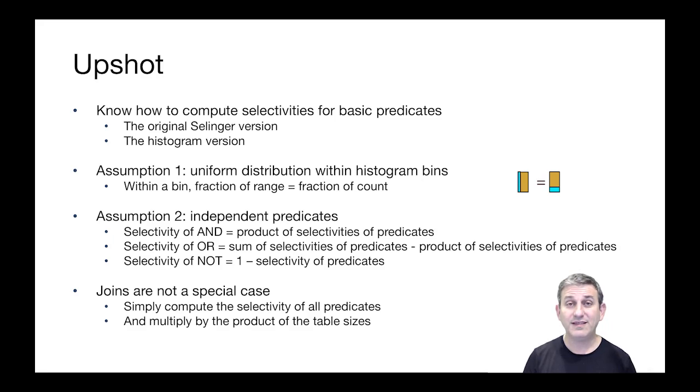The upshot of our discussion is that you need to know how to compute the selectivities for basic predicates and for logical expressions over those predicates. You should be able to do this for the original Selinger version where for a column all you know is its min, its max, its number of distinct values, and the number of tuples in the table.